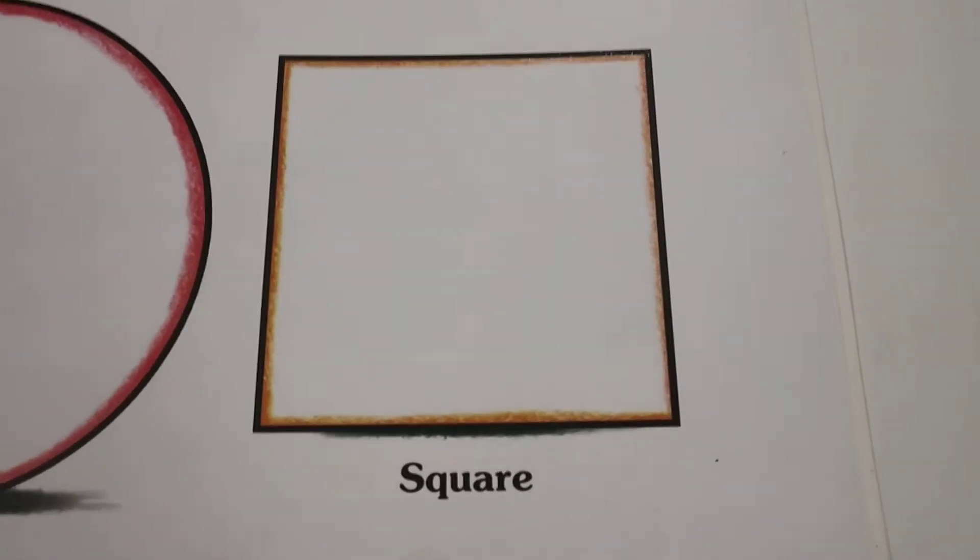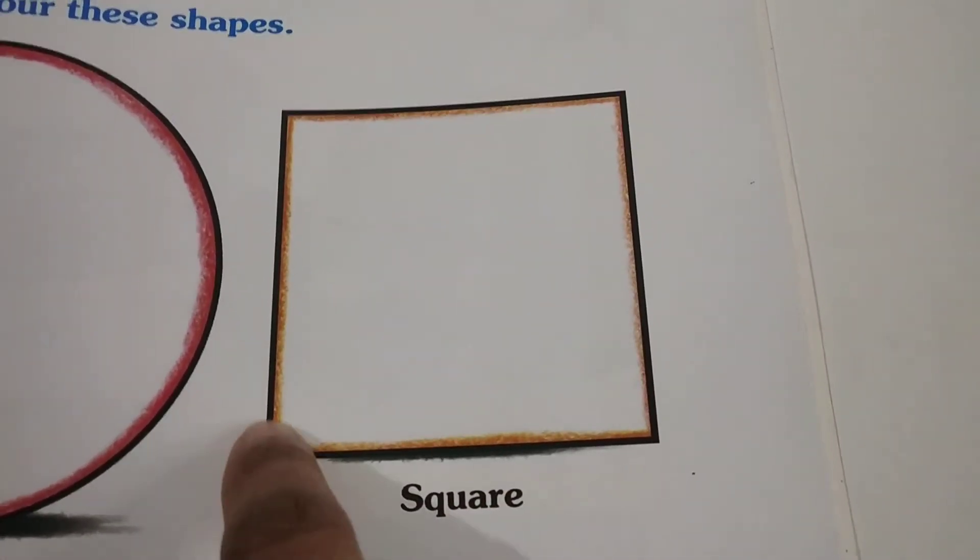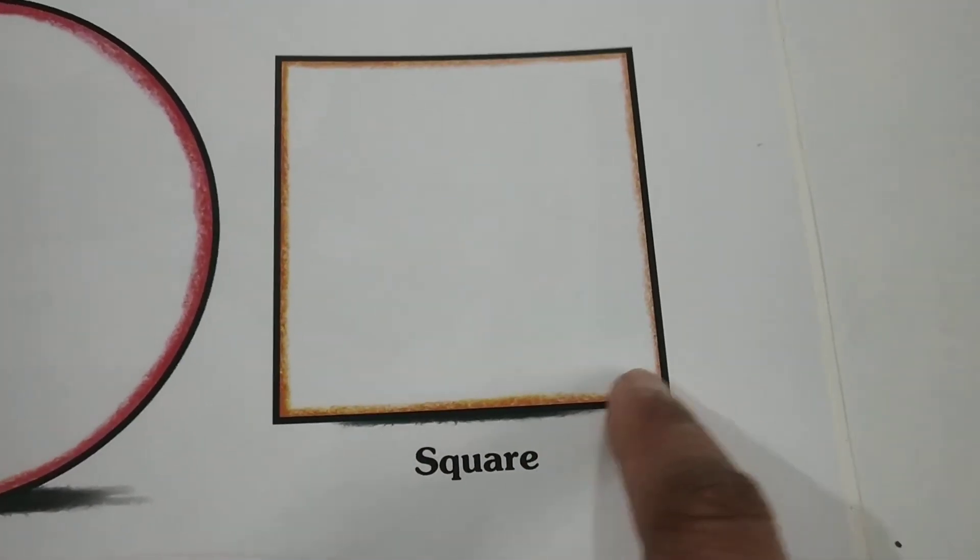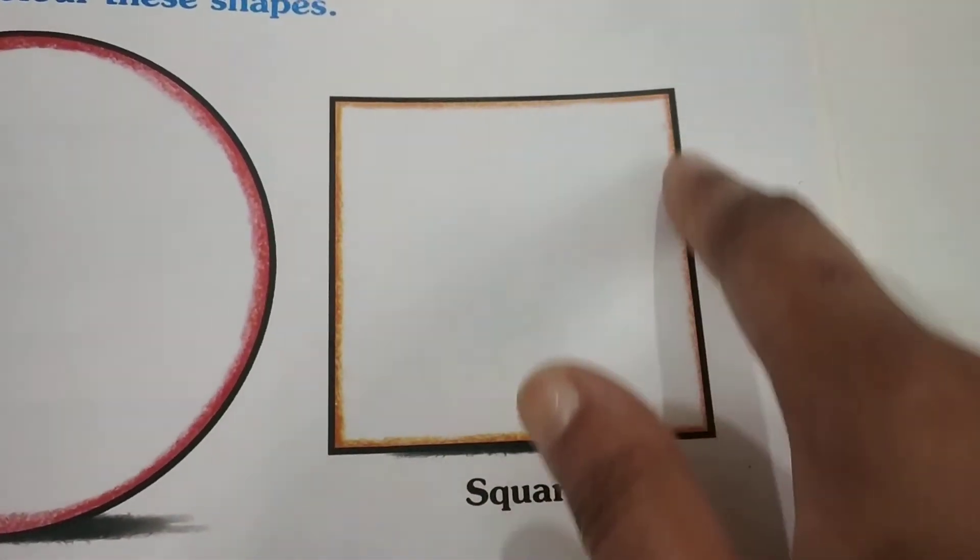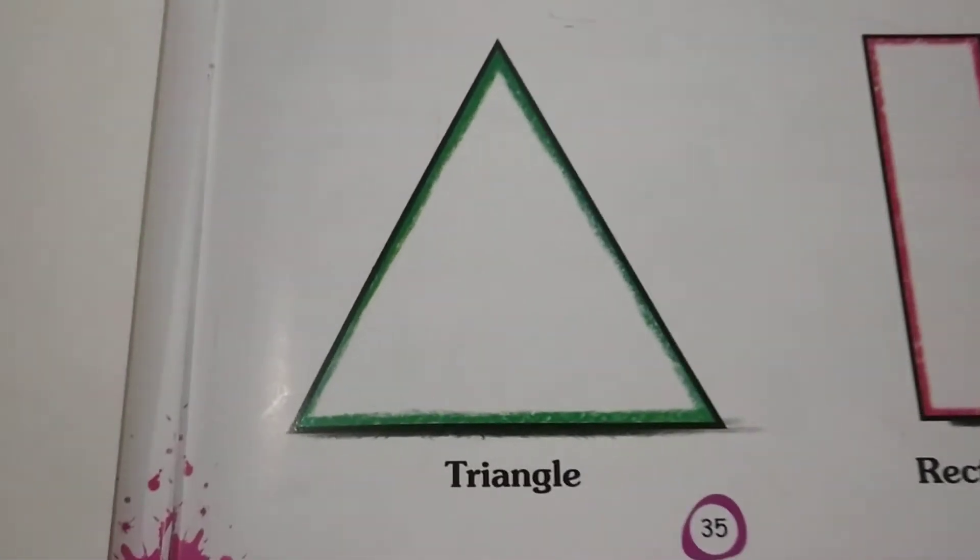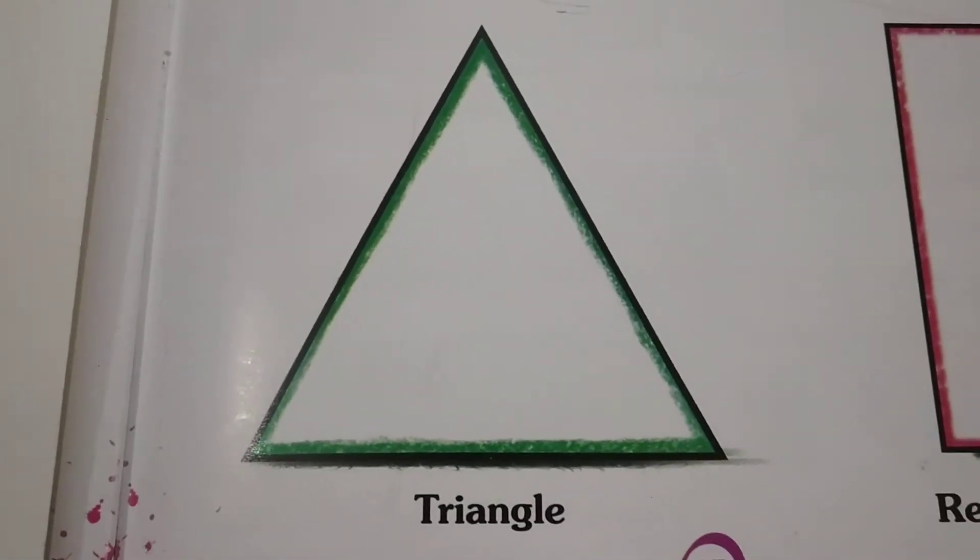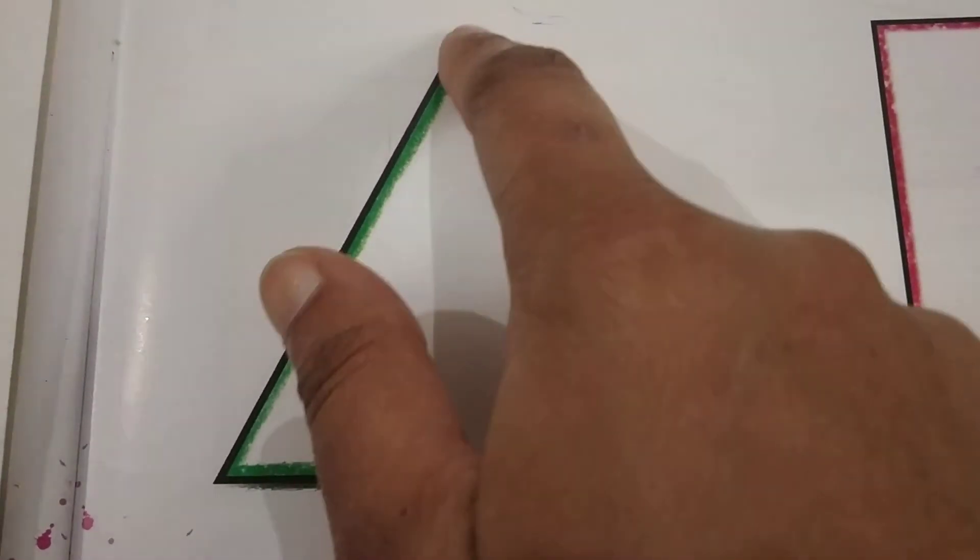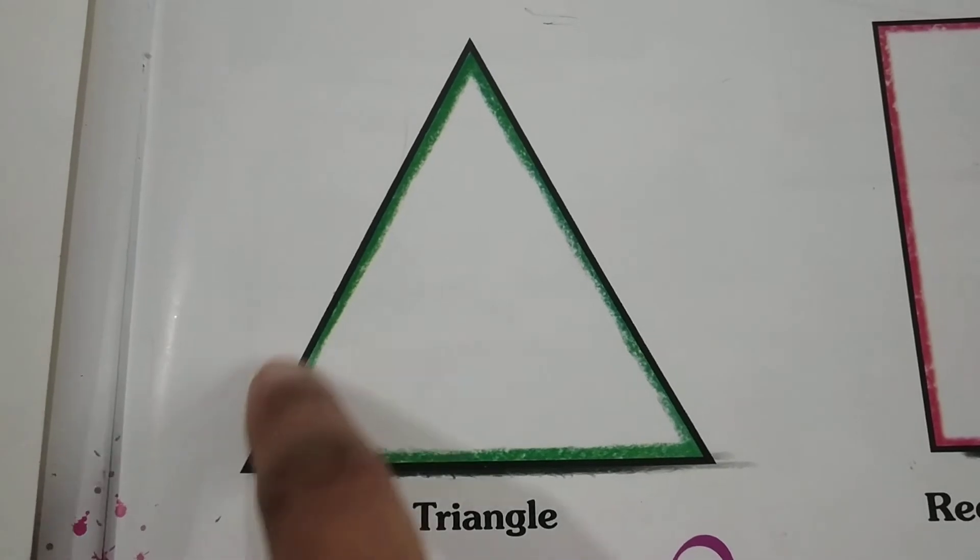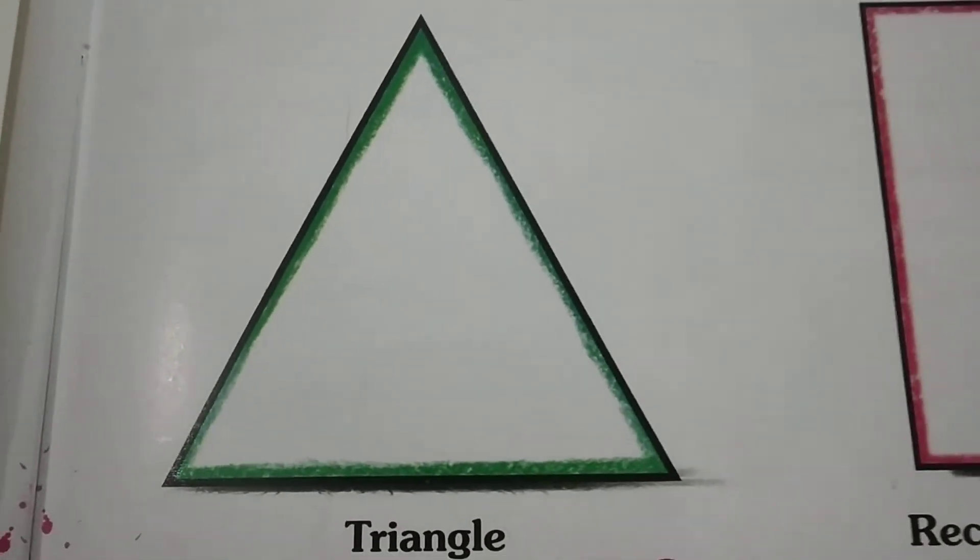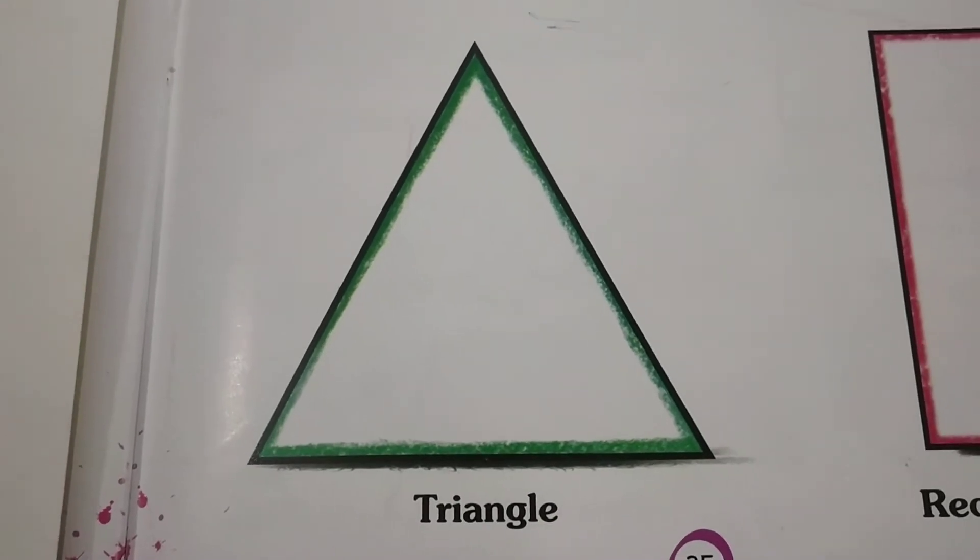Next is triangle. This is a triangle. Repeat after me: triangle, triangle. This is a triangle. You love pizzas, so your pizza slice is a triangle in shape.